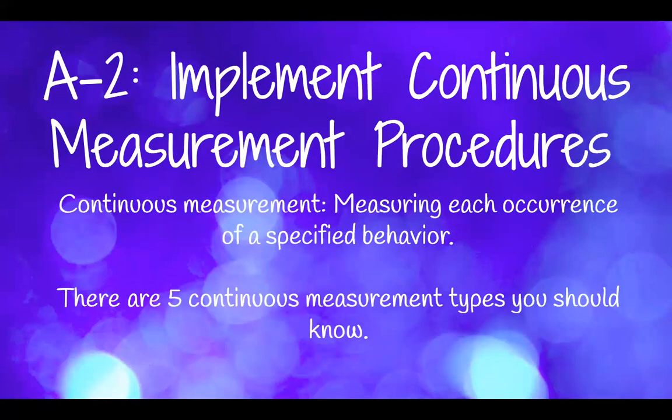A-2 is all about implementing continuous measurement procedures. Continuous measurement is measuring each occurrence of a specified behavior. So if you have a target behavior of, let's say, hitting, you would be measuring every time that behavior occurs — every time your learner engages in hitting, you would be recording that data. There are five continuous measurement types we'll go over.